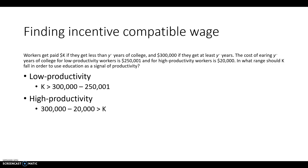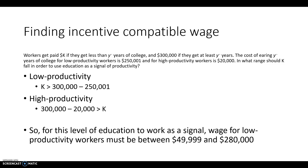If we want to use Y-bar years of college as a signal of who is low productivity and who is high productivity, then K — the amount paid to those with less than Y-bar years of college — needs to be between $49,999 and $280,000. If we set K between those two numbers, low productivity workers will earn more by not going to college and high productivity workers will earn more by going to college. As we look at applications and resumes, those who went to college are high productivity and those who didn't are low productivity. That is the signaling model for human capital.